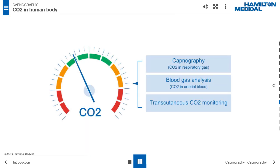Accurate measurement of the CO2 concentration is important for clinicians to understand cellular metabolism, blood circulation, and ventilation. CO2 is commonly measured in three ways. Capnography continuously measures the CO2 concentration in respiratory gas. The results are shown graphically and numerically.